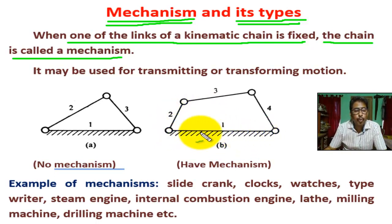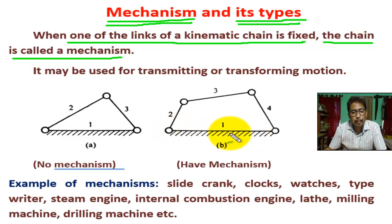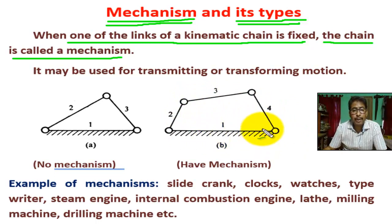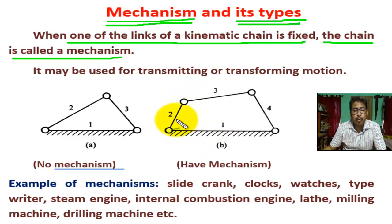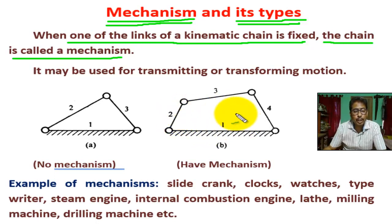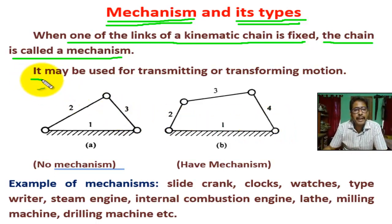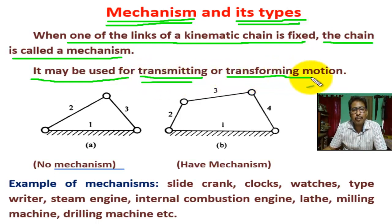When one link of a kinematic chain is fixed for transforming motion, it is called a mechanism. A mechanism is a part of a machine. A mechanism transmits force and mechanical energy from the driving link to the driven link. It may be used for transmitting or transforming motion.